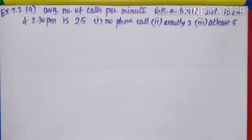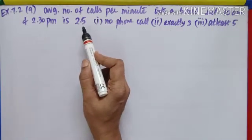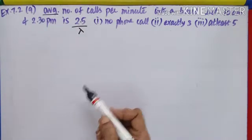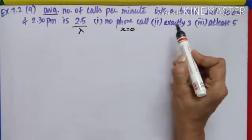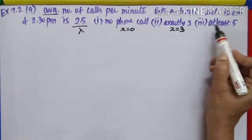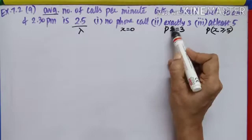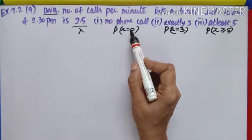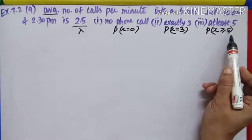Exercise 7.2, Question number 9: the average number of phone calls per minute into a switchboard between 10 AM and 2:30 PM is 2.5. The word 'average' tells me this is lambda. Find the probability that the switchboard has: no phone call (x = 0), exactly 3 (x = 3), and at least 5 (x ≥ 5). Understanding these from the problem: average is lambda, no phone call is x = 0, exactly 3 is x = 3, at least 5 is x ≥ 5.